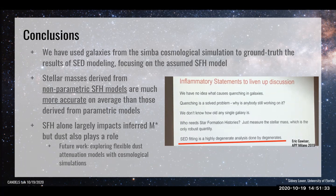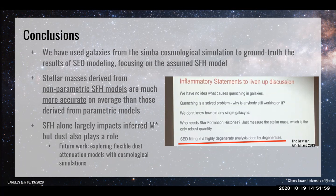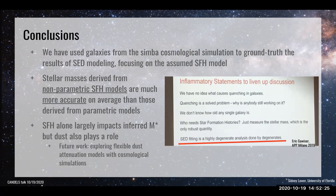Also, nebular emission has not been considered in this work. Obviously applying this to real galaxies, there are uncertainties with stellar evolution but also with nebular emission — both continuum and emission lines. This was partly outside the scope but also because we are actively developing the nebular emission line model in Powder Day. The SED data simply didn't include it, but Prospector is able to model that.